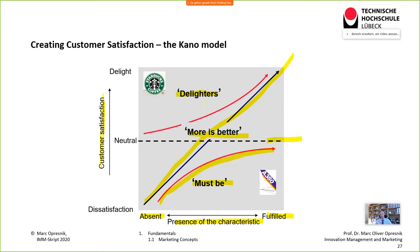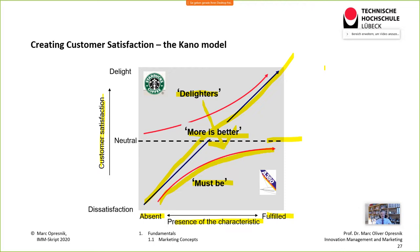The problem with delighters, however, is that over time they become must-be factors. When Bosch and Daimler introduced the first airbag systems, it was a wow factor — a delighter. Now it is a must-be factor. This puts emphasis on the importance of continuously innovating to stay ahead of the game.